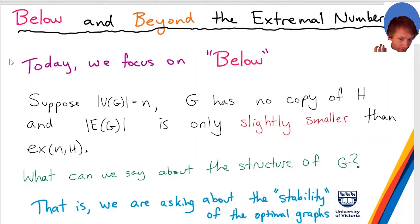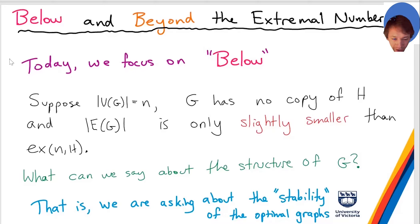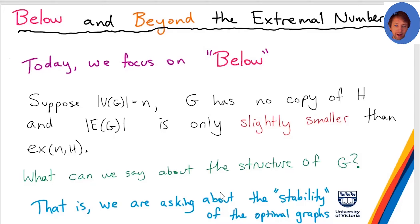Here's the question: suppose you have a graph G with n vertices, G has no copy of H — and really we're going to look at complete graphs, so think of H as just being K_r. G has no copy of this graph, and the number of edges in G is only slightly smaller than the extremal number ex(n, H). What can we say about the structure of G if it doesn't have any copy of H, but the number of edges is just below the extremal number? Does it have to look like the extremal construction, or can it be very different?